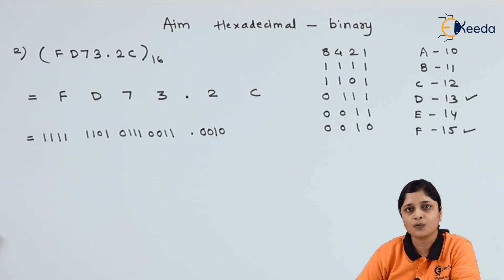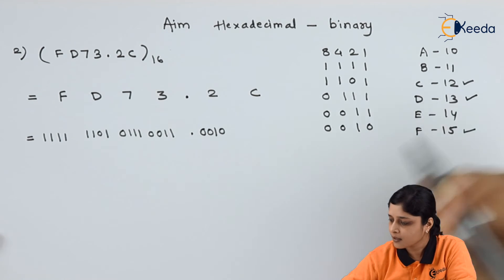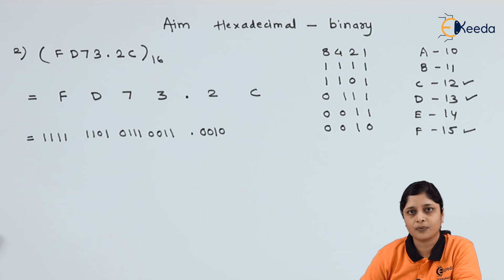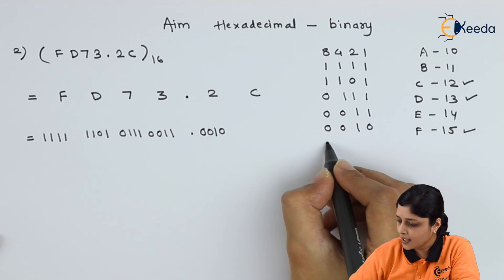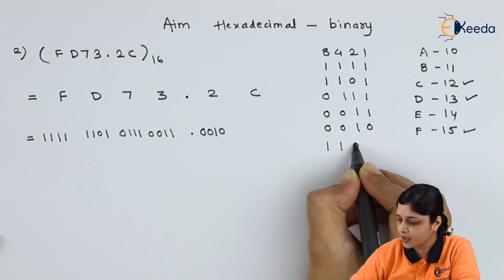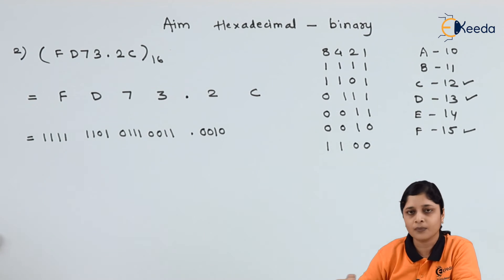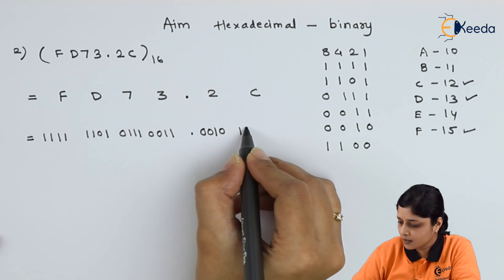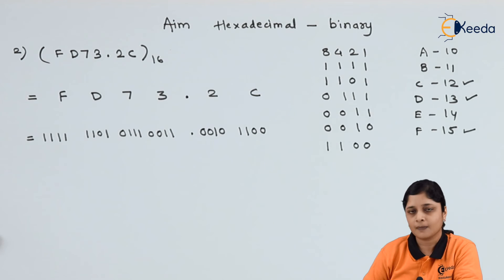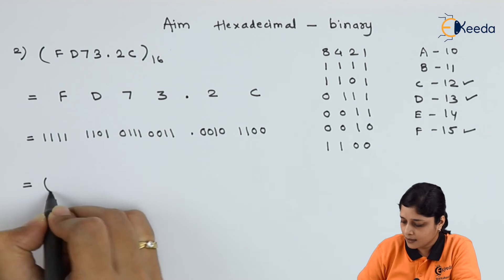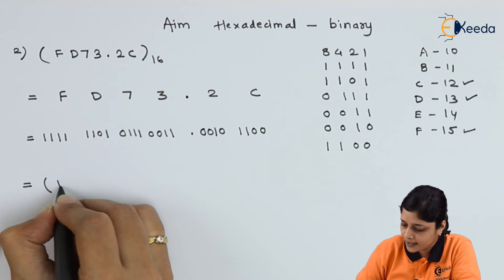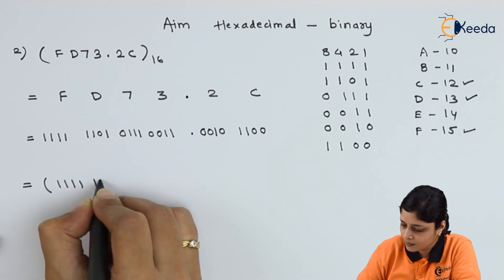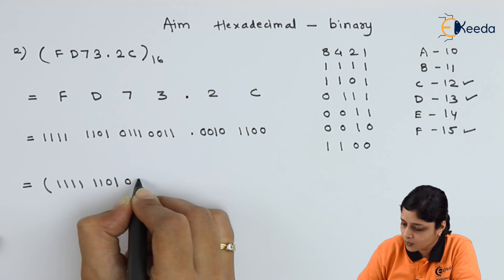For C, the decimal value is 12. 8 plus 4 gives 12, and the remaining bits are 0, so 1100 gives you 12. The binary for C is 1100.